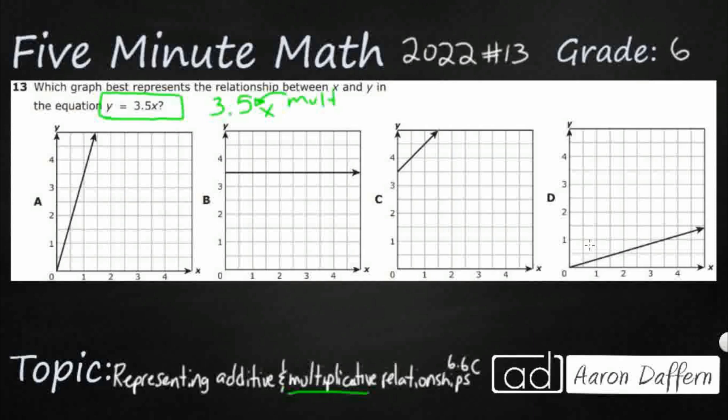So even though it is in this case an x, it could be 3.5z, it could be 3.5q, it doesn't really matter. If you get a number right next to a variable and there's no operation signified, it's always going to be multiply.